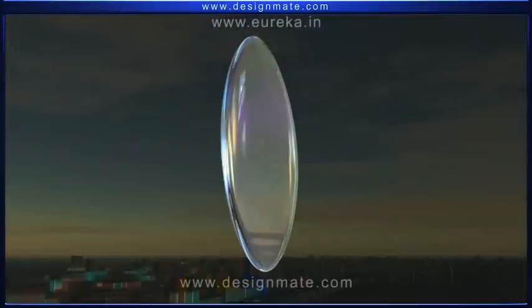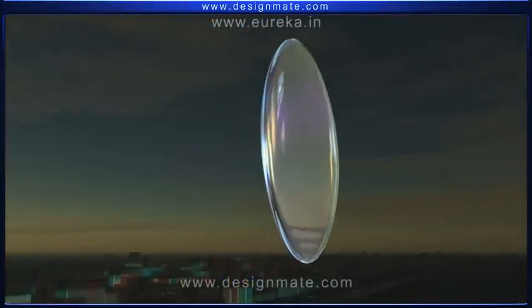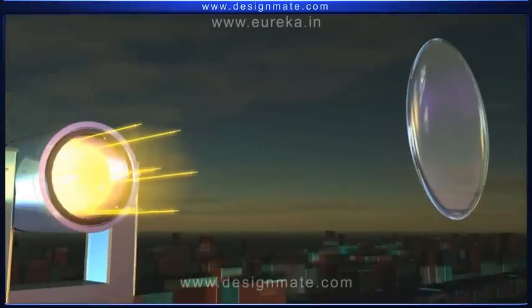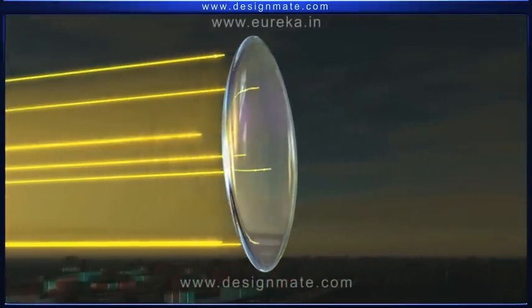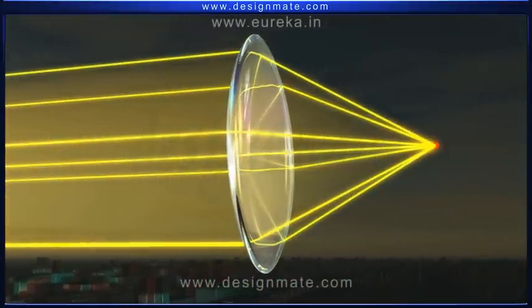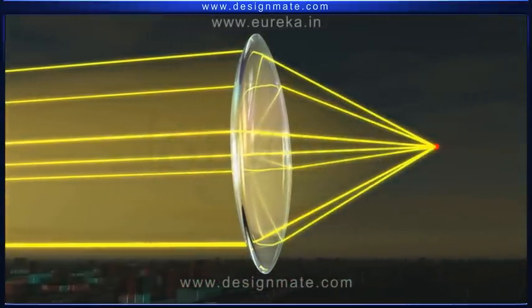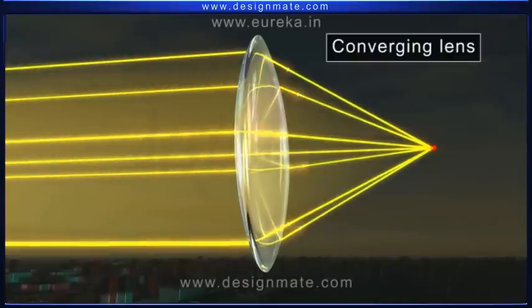We have understood that the rays of light incident on a convex lens get converged on the other side, so it can also be called a converging lens. Let us look at another kind of lens, which diverges the light rays passing through it.